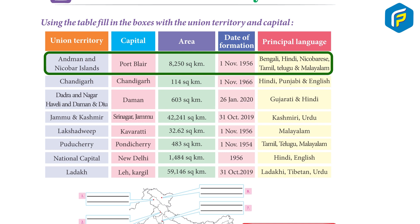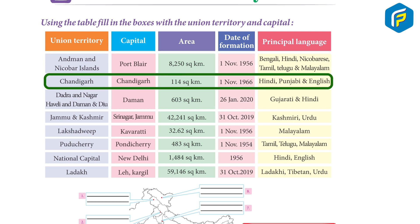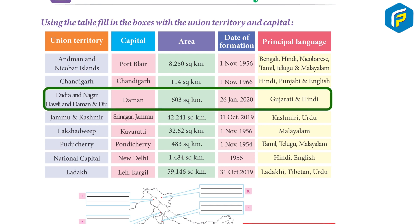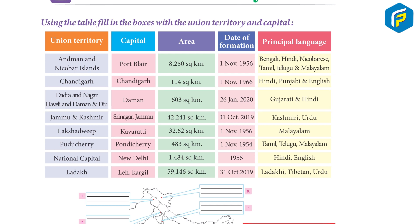...1956, languages: Bengali, Hindi, Nicobarese, Tamil, Telugu, and Malayalam. Chandigarh: capital Chandigarh, area 114 square kilometers, formed 1 November 1966, languages Hindi, Punjabi, and English. Dadra and Nagar Haveli and Daman and Diu: capital Daman, area 603 square kilometers, formed 26 January 2020, languages Gujarati and Hindi.